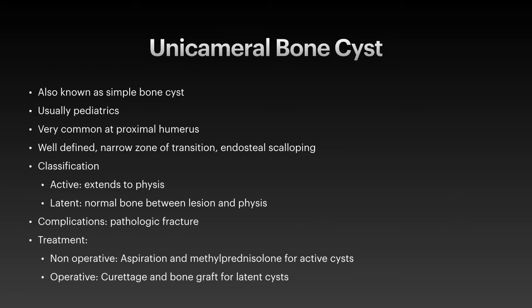The differential diagnosis would include an aneurysmal bone cyst or a telangiectatic osteosarcoma, although they look different on cross-sectional imaging. Aneurysmal bone cysts usually have fluid-fluid levels, which we don't see on unicameral bone cysts unless they have been fractured.